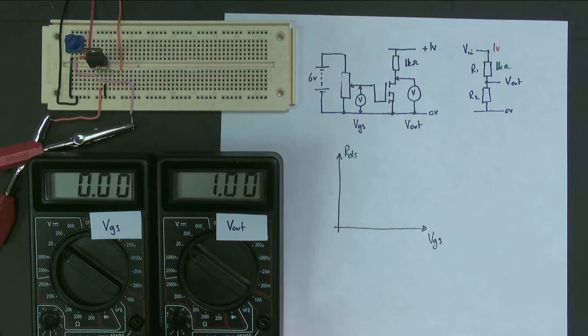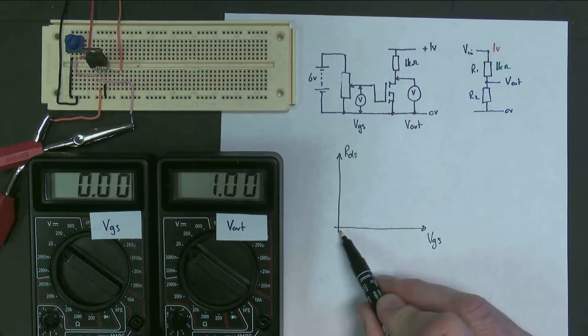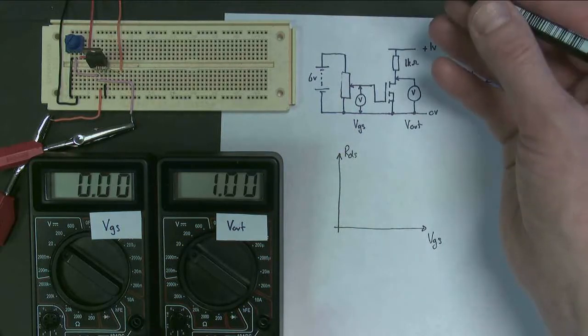Okay? So let's have a look and draw it on our graph, our VGS graph. So what I've got here is, for zero, the resistance is off the top of the scale somewhere. It's massive.